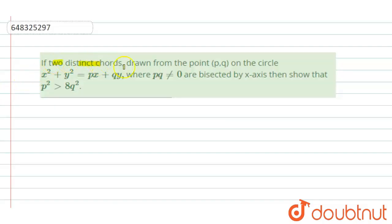Hello everyone. Our question is: if two distinct chords drawn from the point p,q on the circle x² + y² = px + qy, where pq is not equal to zero, are bisected by x-axis, then show that p² is greater than 8q².